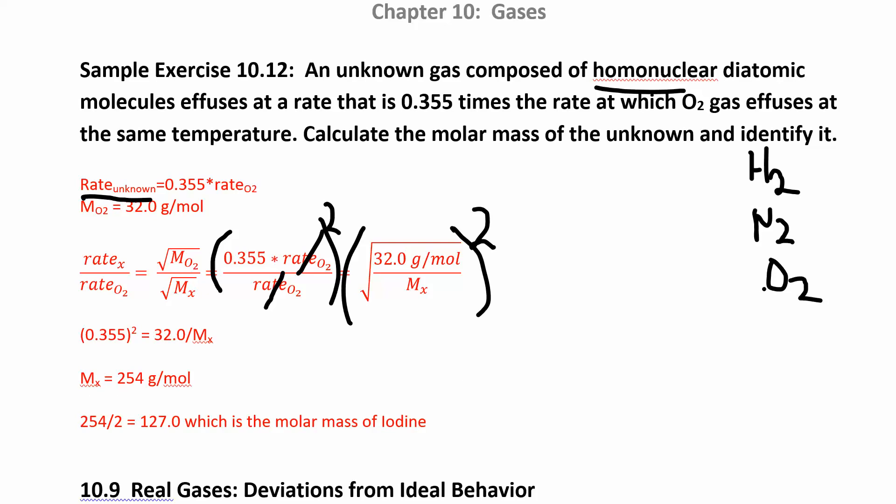Since this is a homonuclear diatomic molecule, I know I have two atoms in here. So if I divide it by two, 127 is one of the atoms. Times two would give me the molar mass. So when you look up the molar mass in the periodic table, you find out that that's iodine. So I2 is my homonuclear diatomic gas that is effusing at a rate that is 0.355 times the amount of oxygen.